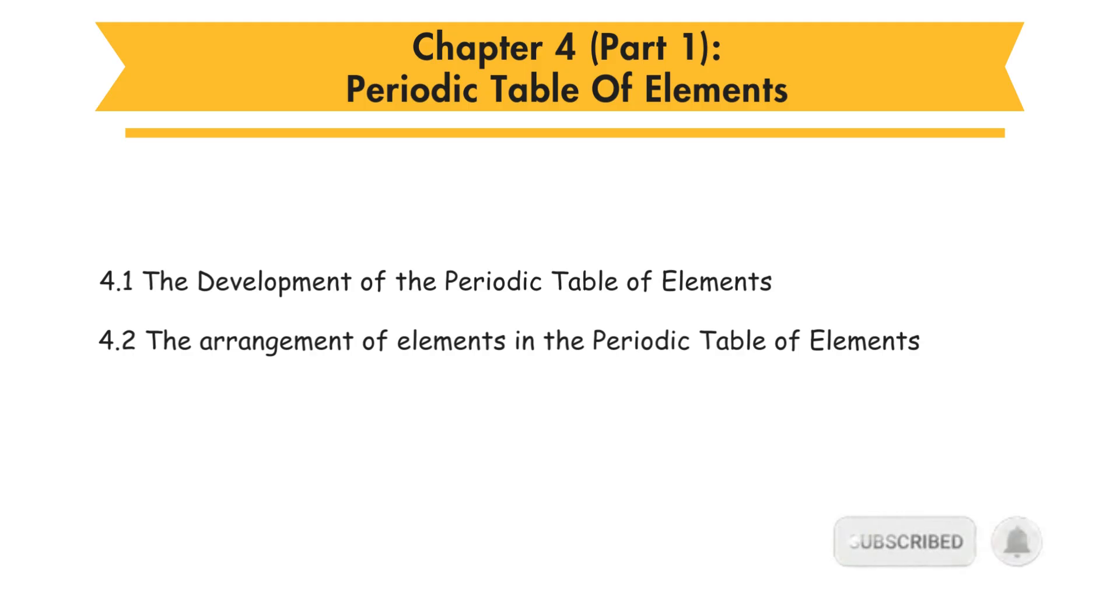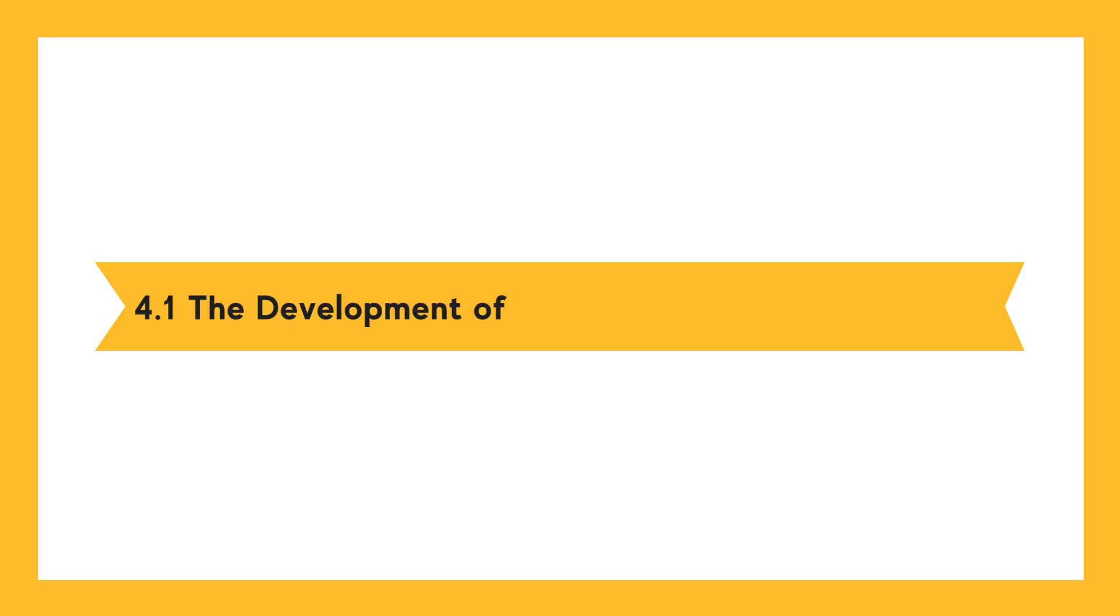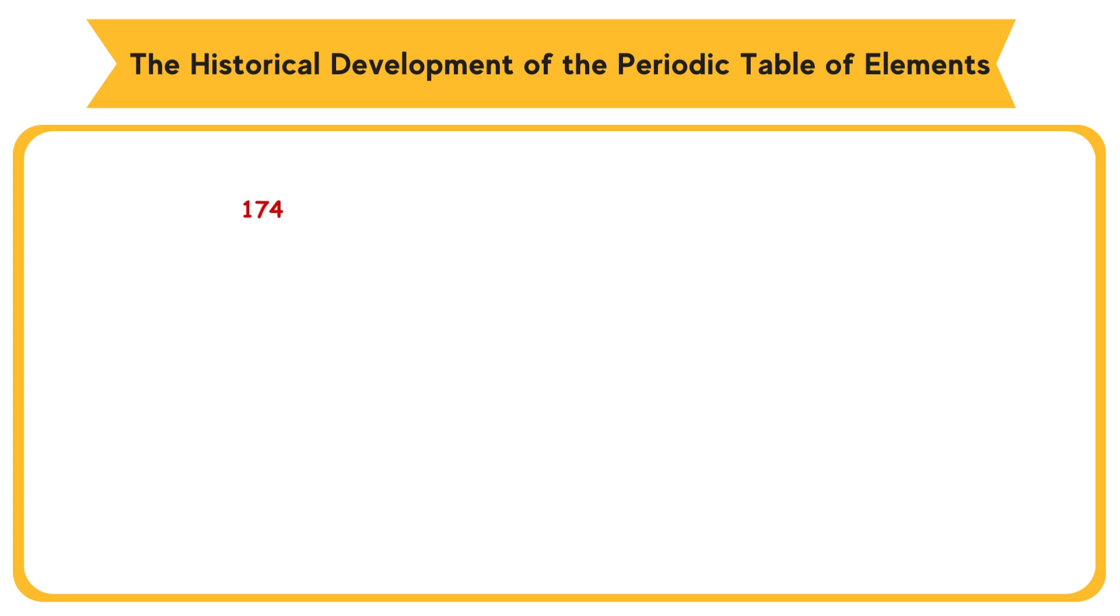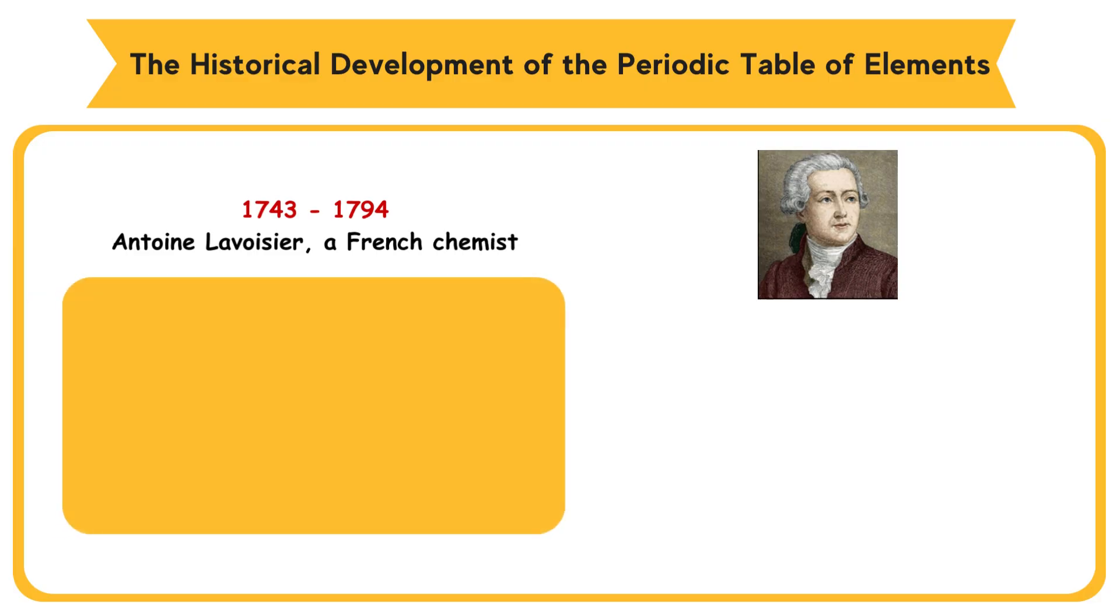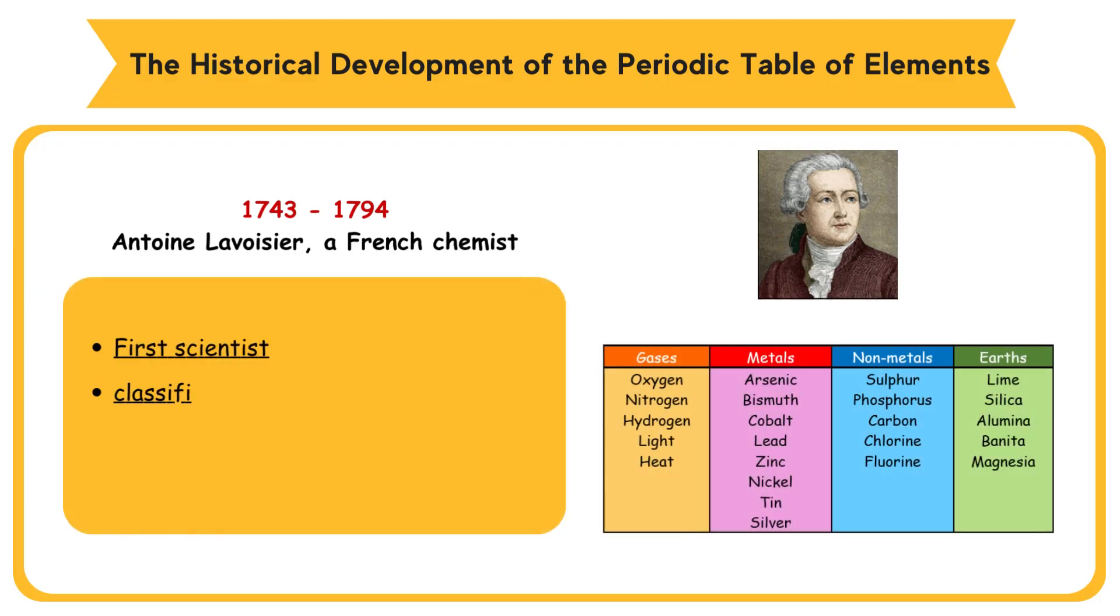4.1 The Development of the Periodic Table of Elements. 1743-1794, Antoine Lavoisier, a French chemist, was the first scientist who started the classification of elements into groups based on their common characteristics.